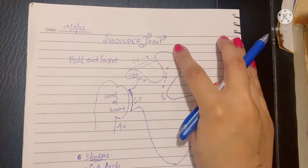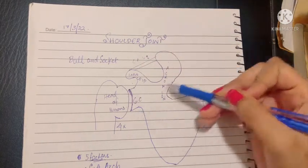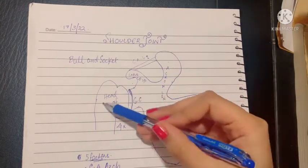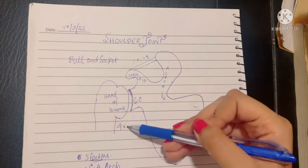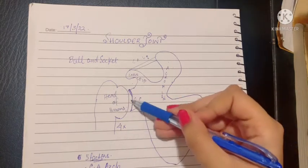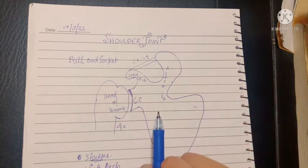Hence the articular surfaces taking part in the shoulder joint are the glenoid cavity of the scapula and the head of the humerus. However, the head of the humerus is about four times the size of this small glenoid cavity. This causes a little weakness in the shoulder joint.